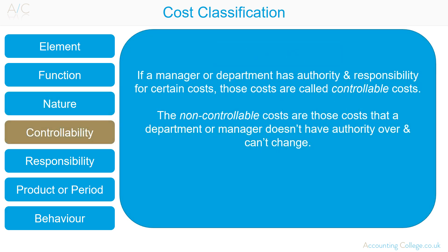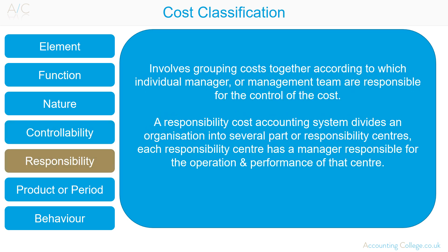By controllability: all costs for a company are controllable at some level of management. However, some costs are uncontrollable with regards to a particular manager or department. If a manager or department has authority and responsibility for certain costs, those costs are called controllable costs. Non-controllable costs are those that a department or manager doesn't have authority over and cannot change. Managers want to be held responsible only for costs within their control, not for costs beyond their control.